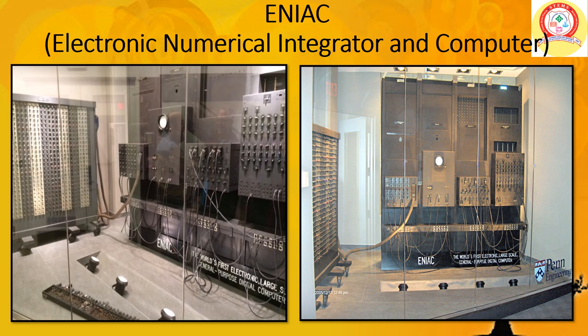ENIAC — Electronic Numerical Integrator and Computer. ENIAC was developed by John Presper Eckert and John W. Mauchly in the year 1946. This was the first fully electronic digital computer. It consisted of 18,000 vacuum tubes, occupied 63 square meters, and weighed more than 27 tons. This computer was originally built to help the army in launching bombs and missiles more accurately. It did not have stored programs — it had to be programmed by manual wiring for each task.